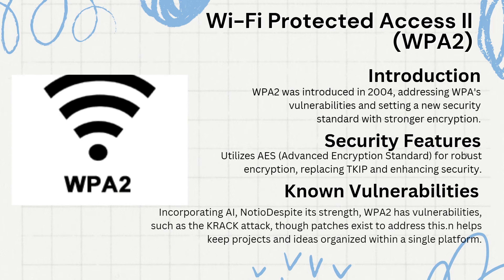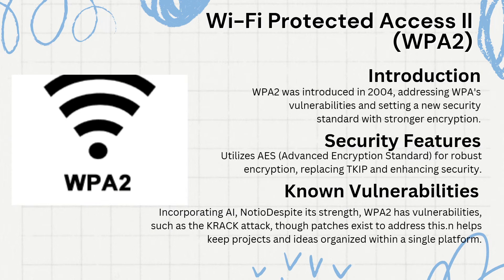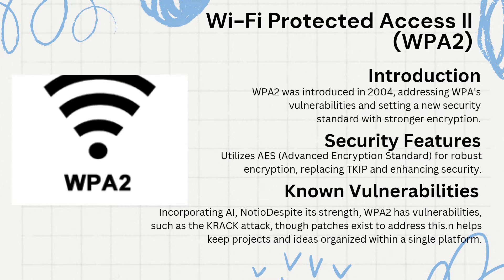As technology advanced, so did the need for better security. Enter WPA2, introduced in 2004. The major leap here was the adoption of the Advanced Encryption Standard, or AES. Unlike TKIP, AES is a more secure and sophisticated encryption method, and it's even used by the U.S. government for securing classified data.